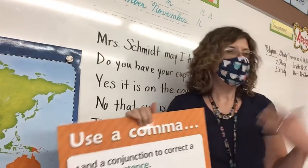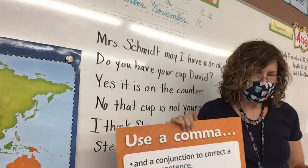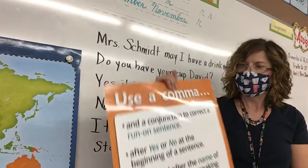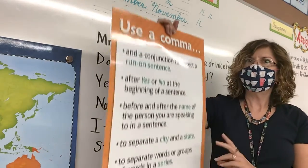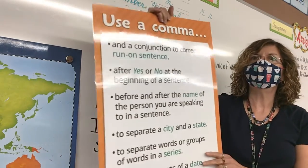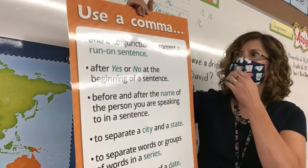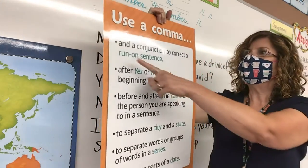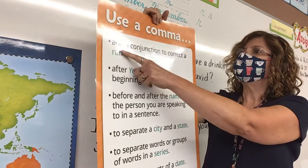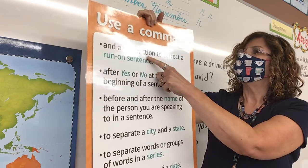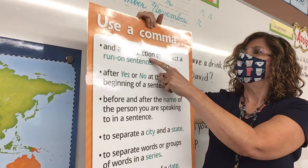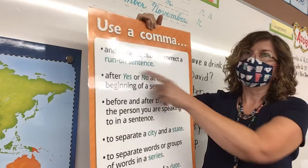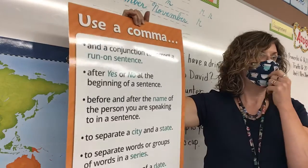Okay, for language, we will be doing page 19 and page 20. All right, of course, let's review the comma rules. One of the comma rules we already looked at was to add a comma and a conjunction to correct a run-on sentence.